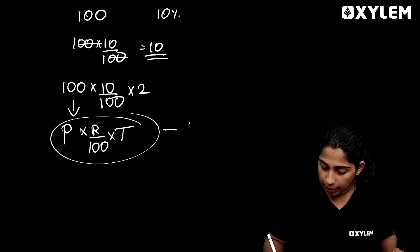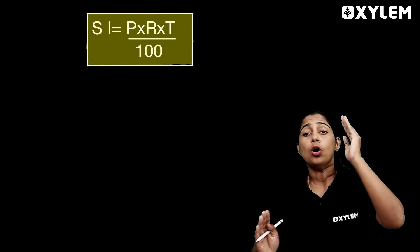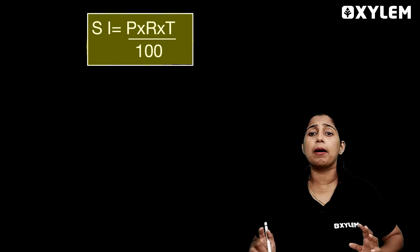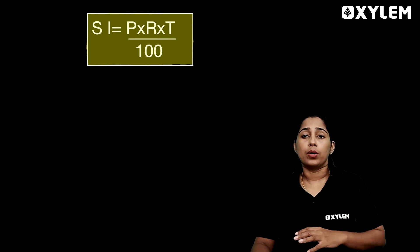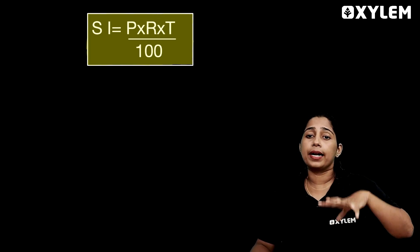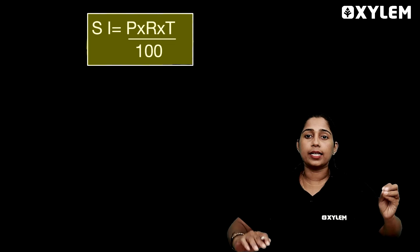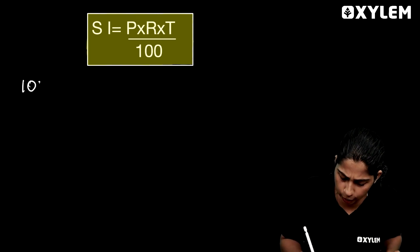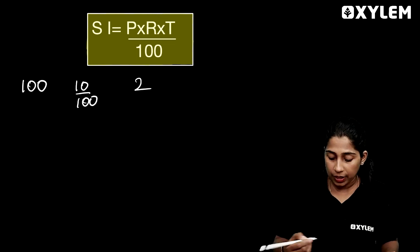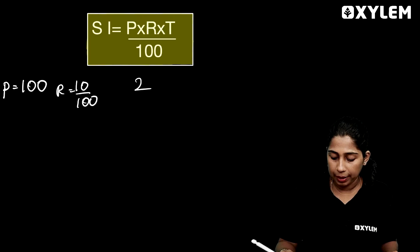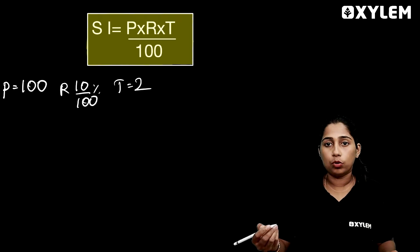Now we have to calculate the simple interest: PRT divided by 100. Simple interest is equal to PRT by 100. P is the principal amount, R is the rate of interest, T is the time period — how much time period you have to deposit. If you have 100 rupees at 10% for 2 years: P = 100, R = 10%, T = 2 years.